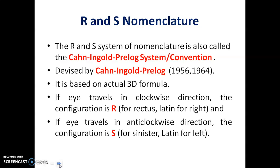We assign priorities to the atoms, and then if the eye travels in a clockwise direction, the configuration is R, which means 'rectus' in Latin, meaning right. If the eye travels in an anti-clockwise direction, the configuration is S, which means 'sinister' in Latin, meaning left.